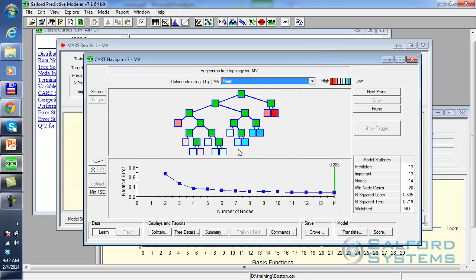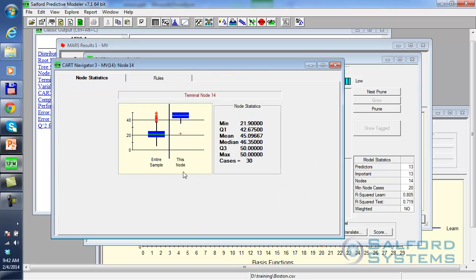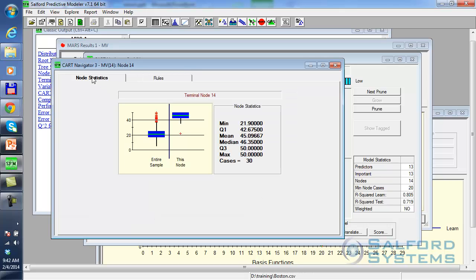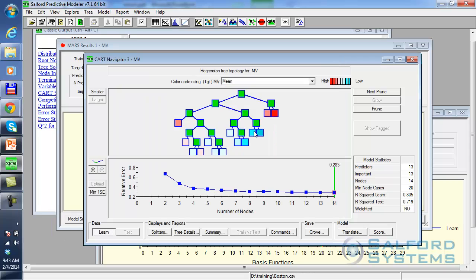If you color code nodes according to means, what you will see is that this node has the highest predicted mean, and when you click on it and look at these node stats, you see that the entire sample is here, but the rules, which is RM greater than 7.4, not surprisingly, isolated this highest, most expensive segment, and there's only one outlier here that, for some reason, doesn't have very expensive homes.